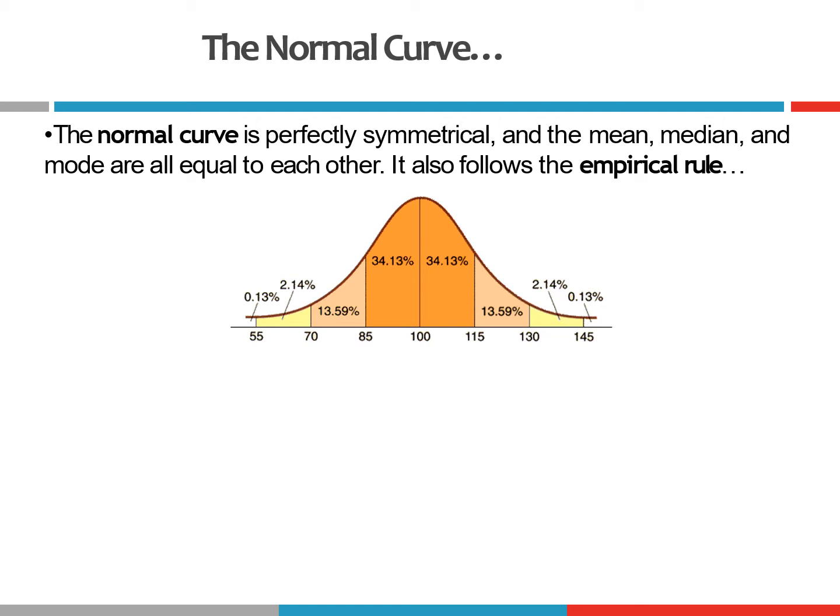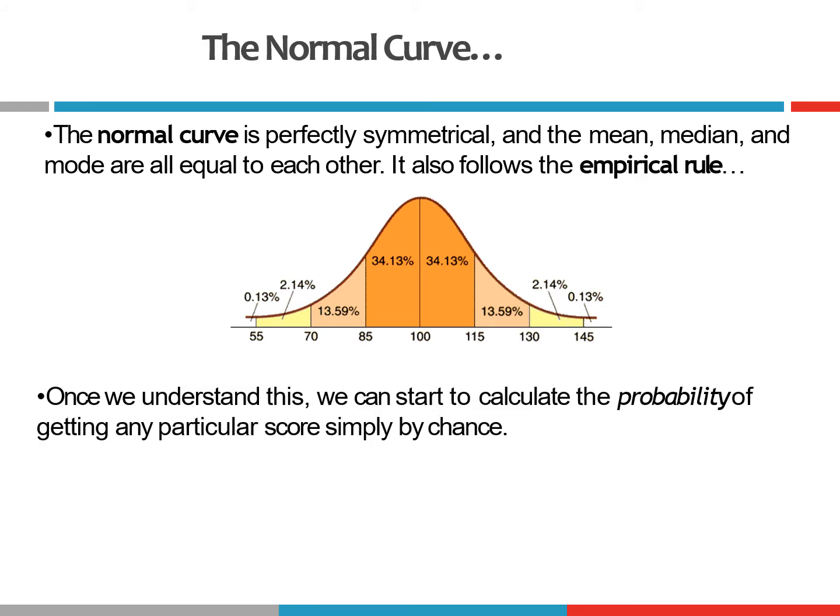In the dark orange area, that accounts for 68% of the scores that fall within one standard deviation. The tan color accounts for the 95% of scores that fall within two standard deviations. And the yellow part accounts for scores that fall within three standard deviations. If you add all of those up, you get 99.7%. So once we graph our normal distribution in this way, it allows us to start estimating the probability of getting any particular score by chance.